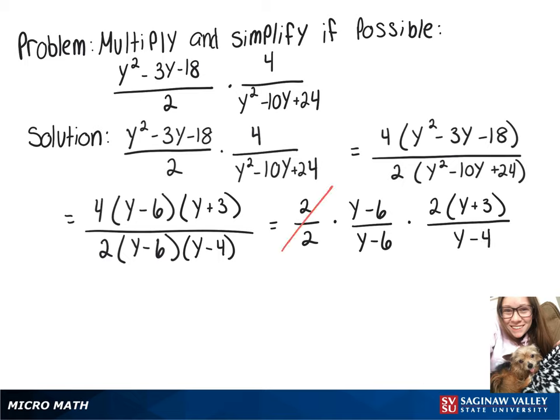Now these parts will cancel out because they're equal to 1. And then when we distribute that 2, it'll give us our final answer of 2y plus 6 over y minus 4.